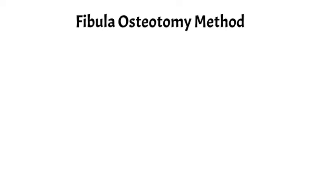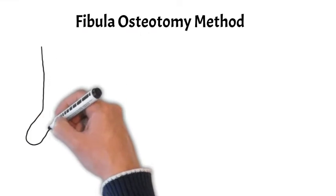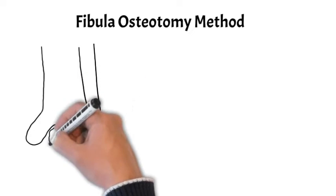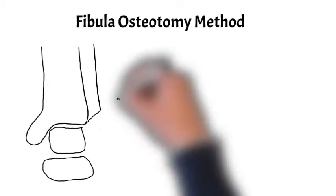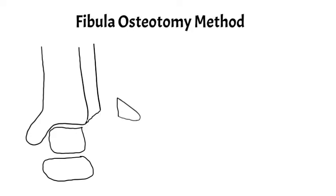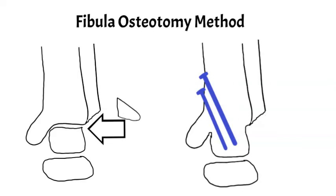Now the first way of actually doing this type of operation is something called a fibular osteotomy method and it's probably the most common. And what that means is actually taking part of the fibula off in order to gain access to the joint so that the cartilage can be removed. And we can see that in the left diagram there. The fibular end has been removed and that allows access to the joint where the arrow is there. And then screws are placed across the tibia and the talus in order to make them one bone.